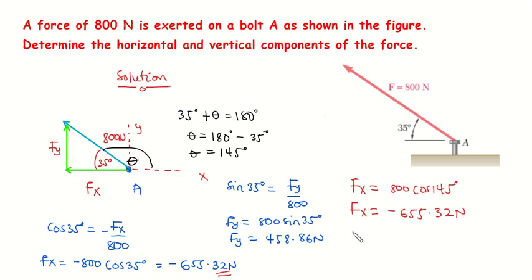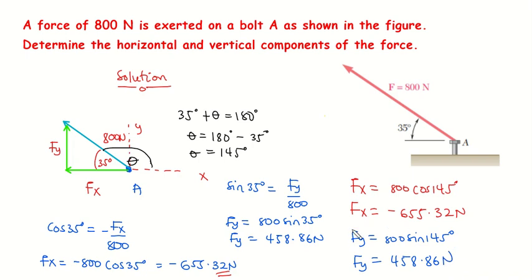For the Y component, FY equals 800 multiplied by sine of 145 degrees. 800 times sine of 145 degrees gives us 458.86 Newtons — the same value as before. That's one way to approach this problem as well. Thank you for watching; please like the video and subscribe to the channel.